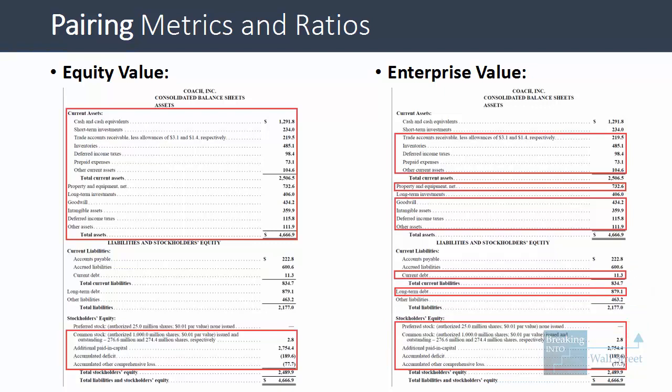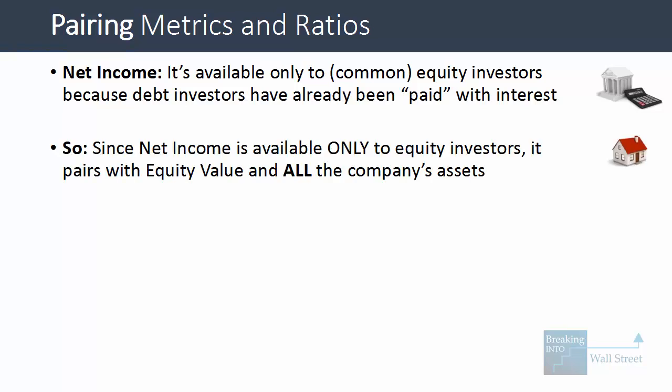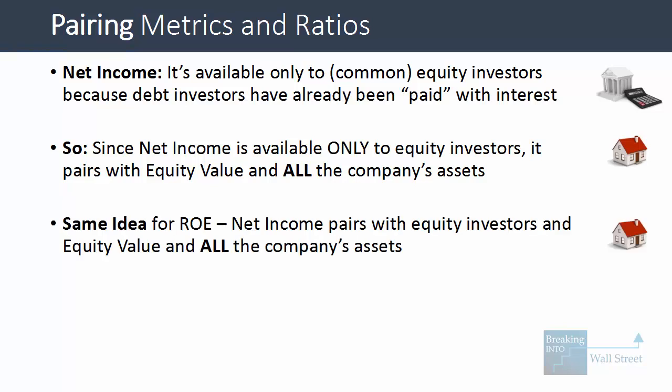Based on that definition, you should start to see why we use net income when calculating return on assets: net income is available only to the common equity investors. When you calculate net income, the debt investors have already been paid — interest has already been subtracted out. Therefore, net income pairs with equity value and also with all the company's assets, because common equity investors have a claim on all the company's assets, both core and non-core. The same logic applies to return on equity.